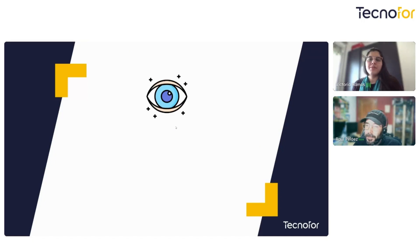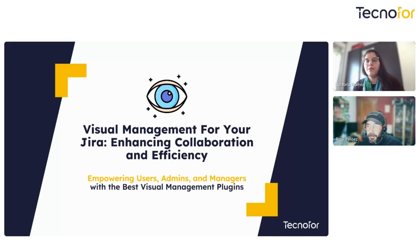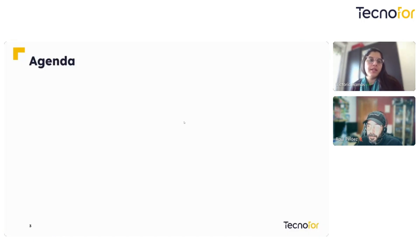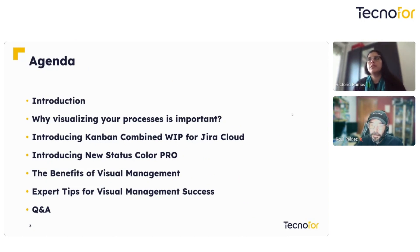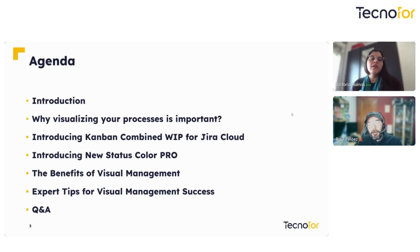Let's understand our agenda and how we will be talking about improving visual management in Jira — how we can enhance collaboration and efficiency with our teams. Today we will be covering an introduction to our visual management improvement with our plugins, introducing two plugins: Kanban Combined WIP for Jira Cloud and the new Status Color Pro. We'll also cover the benefits of visual management.